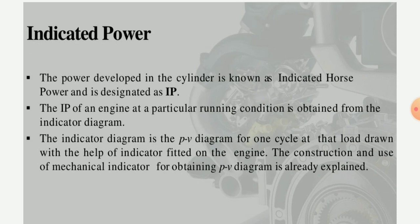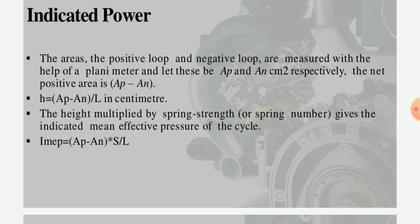The indicator power of the brake system — the power developed in the cylinder is known as the indicated power, which is always measured in terms of horsepower and designated by IP. The IP of the engine under a particular running condition is obtained from the indicator diagram, plotted on a pressure-volume (PV) diagram for one cycle, drawn with the help of an indicator fitted on the engine. The area of the positive loop and negative loop are measured with a planimeter, denoted as AP and APR respectively, and the net positive area is obtained.